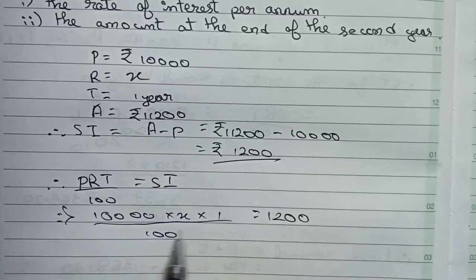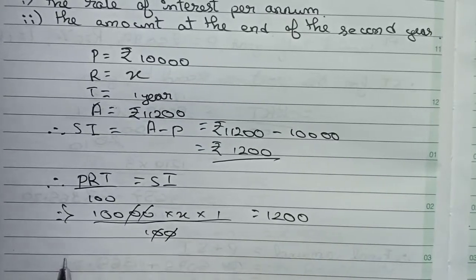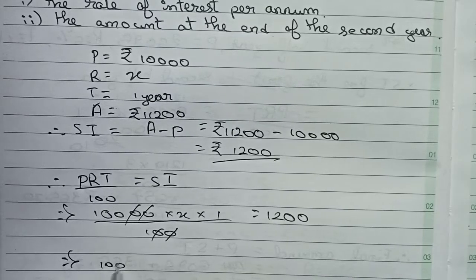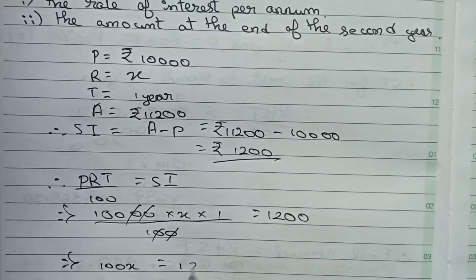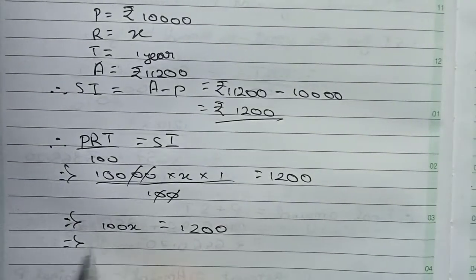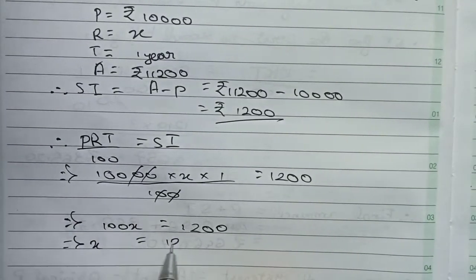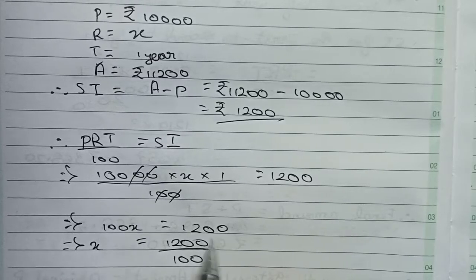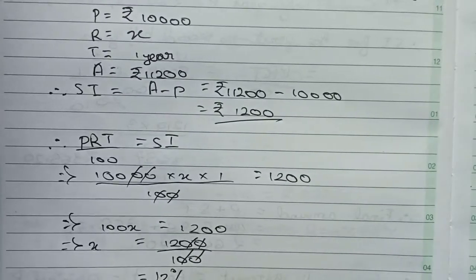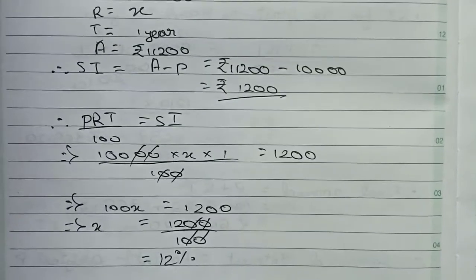First we cancel the zeros, so 100x = 1,200. From this equation, x = 1,200/100. After canceling zeros, we get 12. Therefore, 12% per annum is the rate of interest.